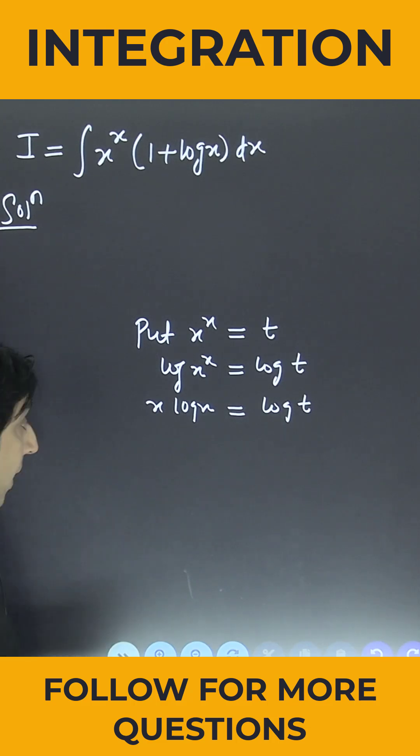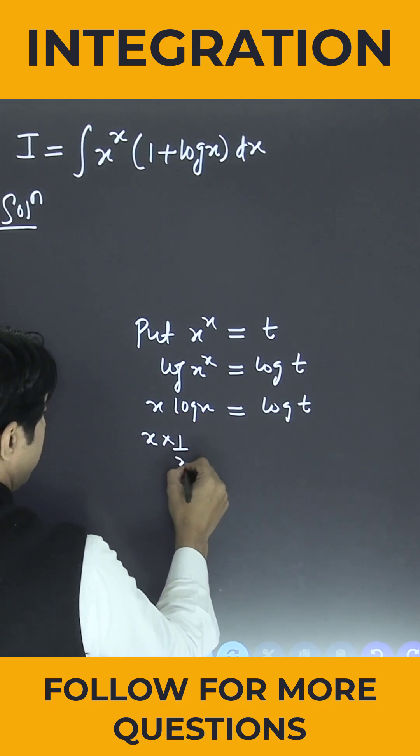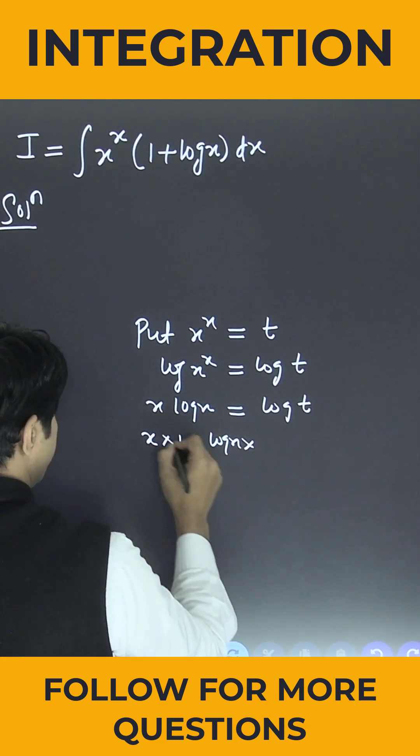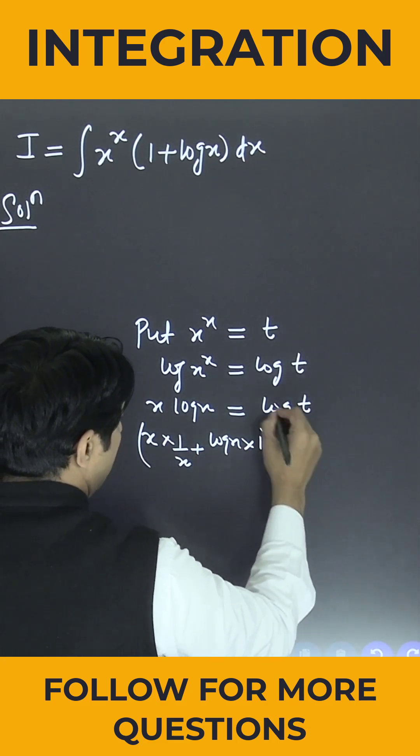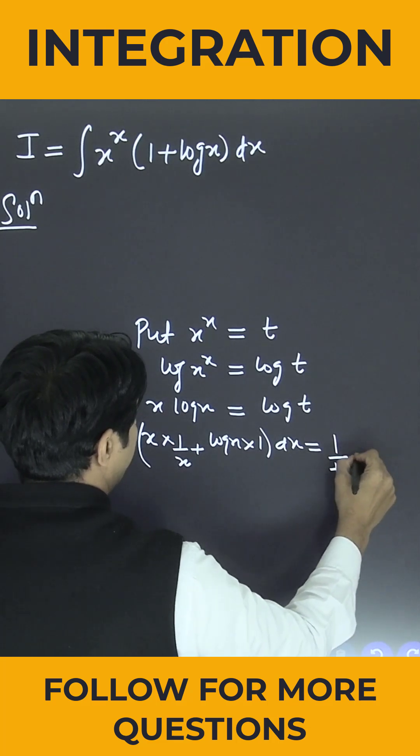If you differentiate with respect to x what will happen? First function as it is, differentiation of second, plus second function as it is, differentiation of first into dx is equal to what is log t differentiation, this is 1 by t into dt.